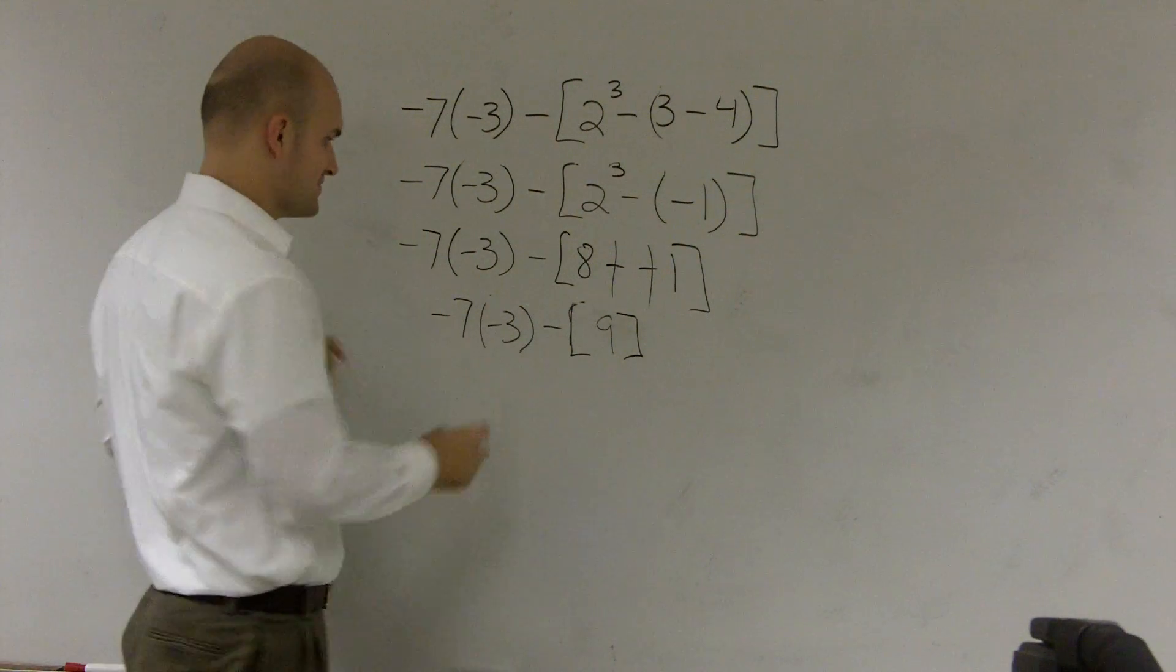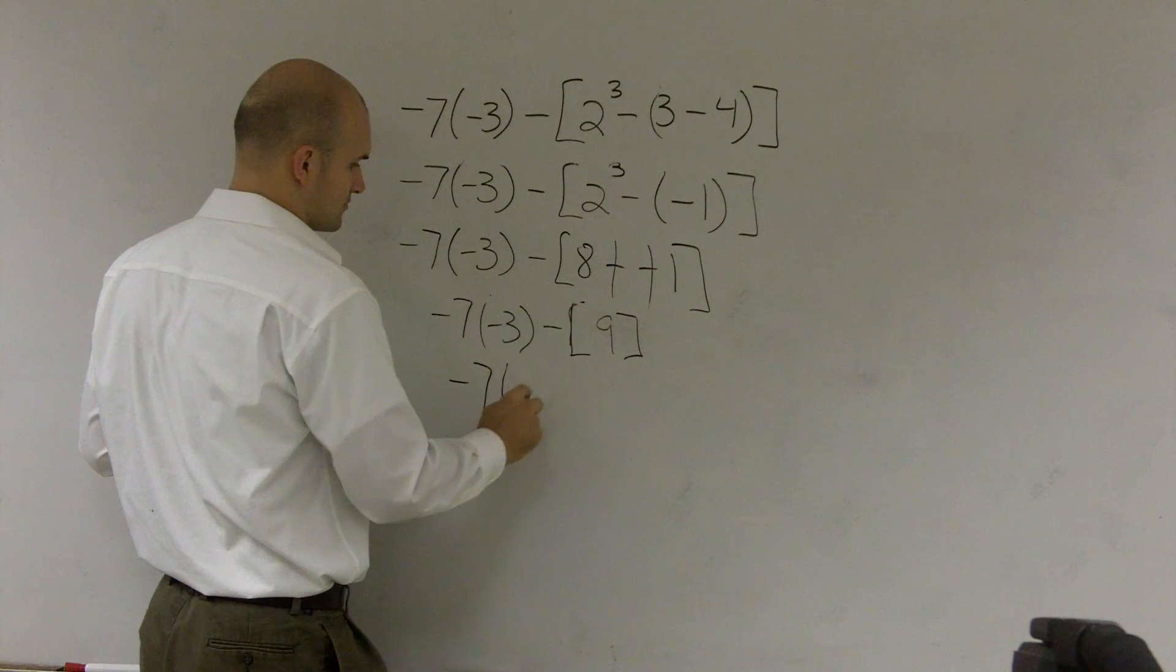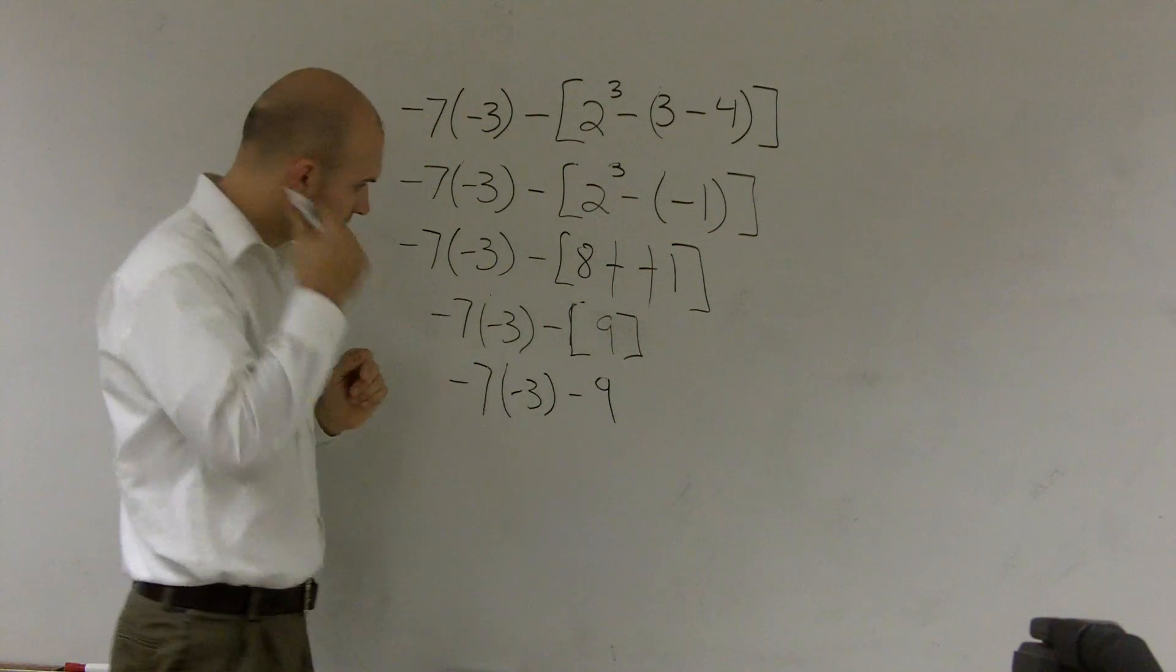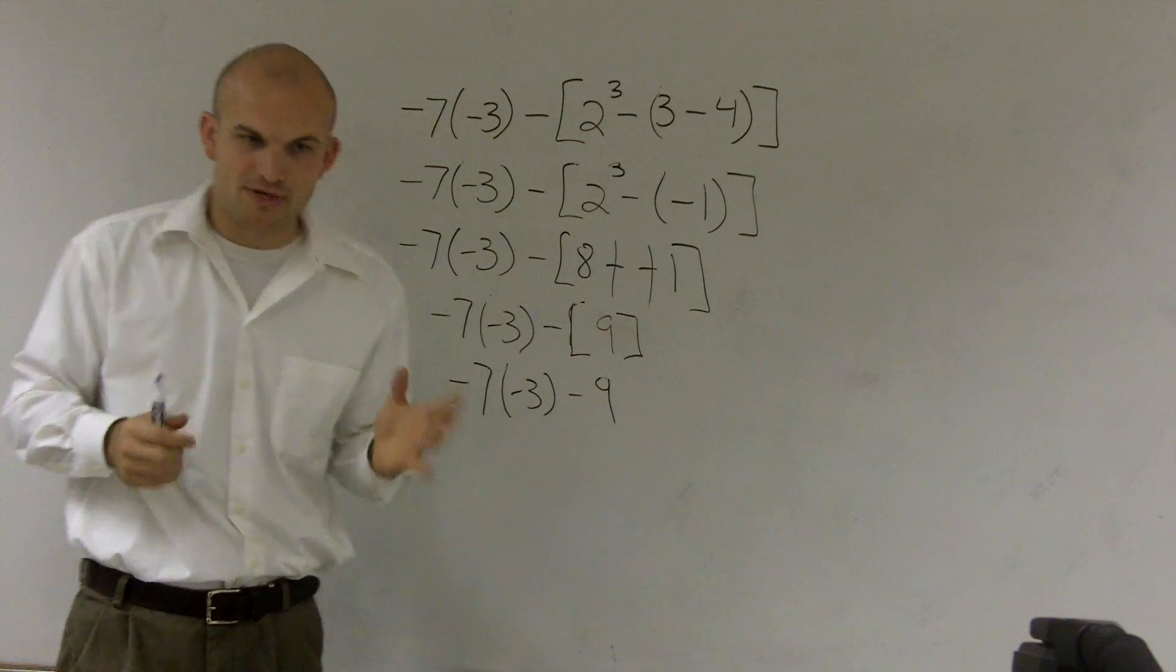So I have negative 7 times a negative 3 minus 8 plus 1, which is 9. Now I can distribute that negative sign over here. Now, a lot of people want to say, oh, why don't you do subtraction, right? Everybody likes to do addition and subtraction first.